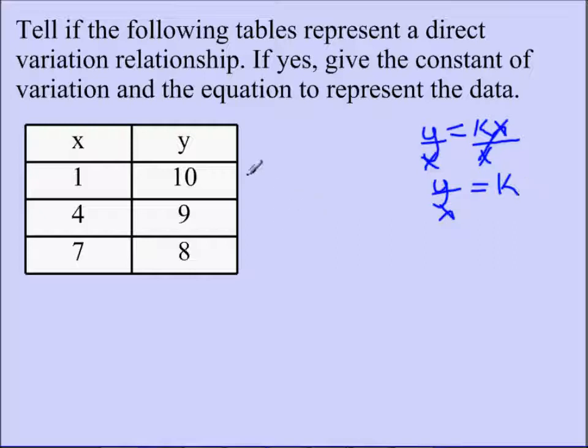Now, if I take the y and divide by x each time, and the k value that I get is the same, that means I have a direct variation. If not, then that means I don't have a direct variation. So I'm going to go ahead and do that.